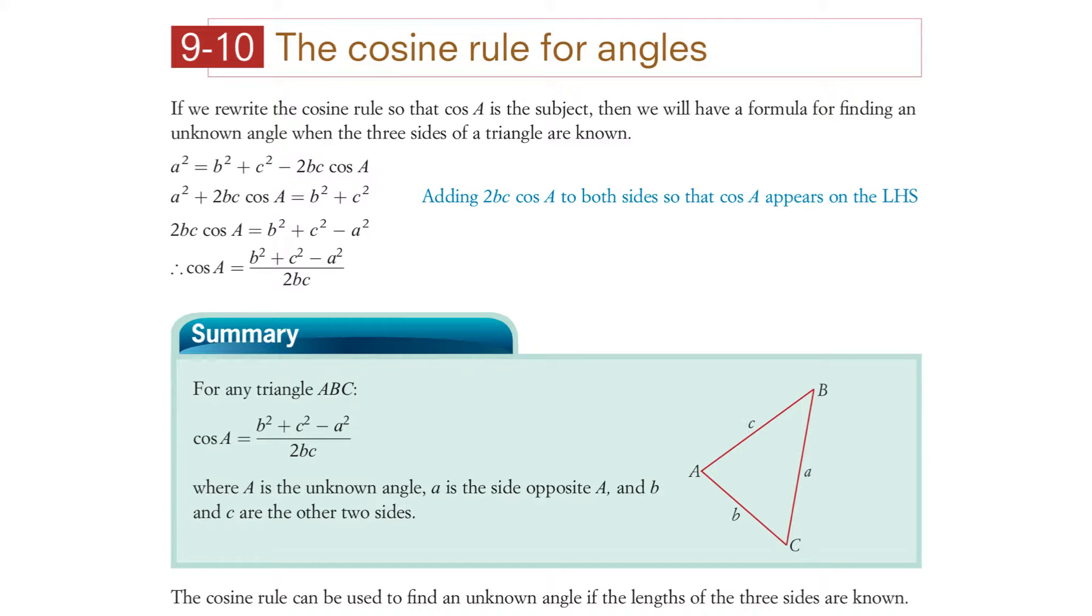And recognize the pattern. Again, we've got that pattern of the BC and they're the two that you add together. Where A is the unknown angle, A is the side opposite A, and B and C are the other two sides.